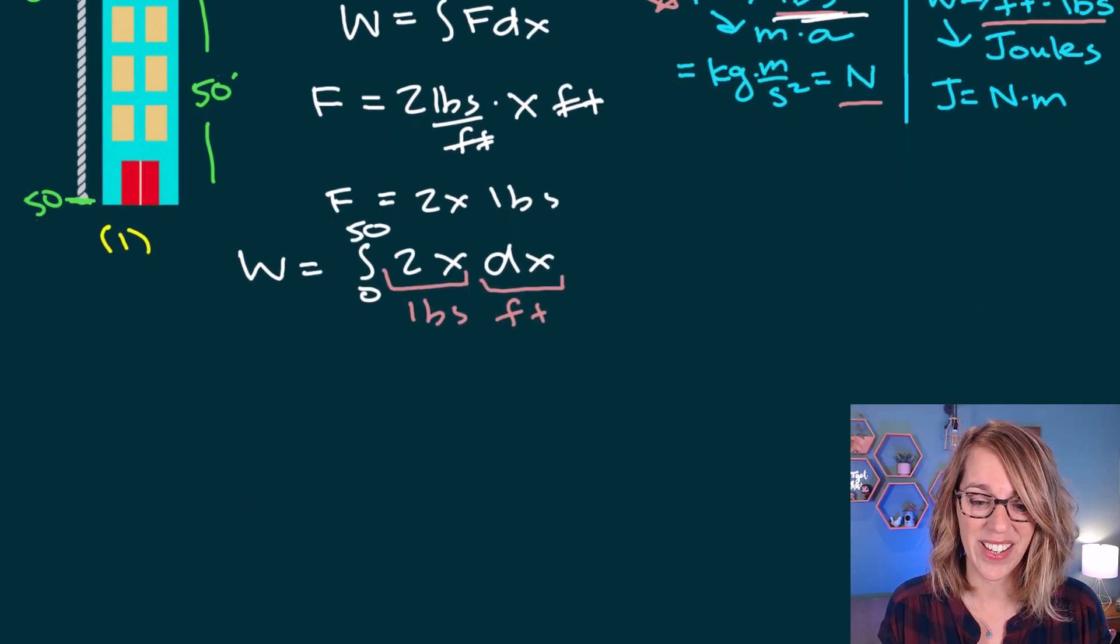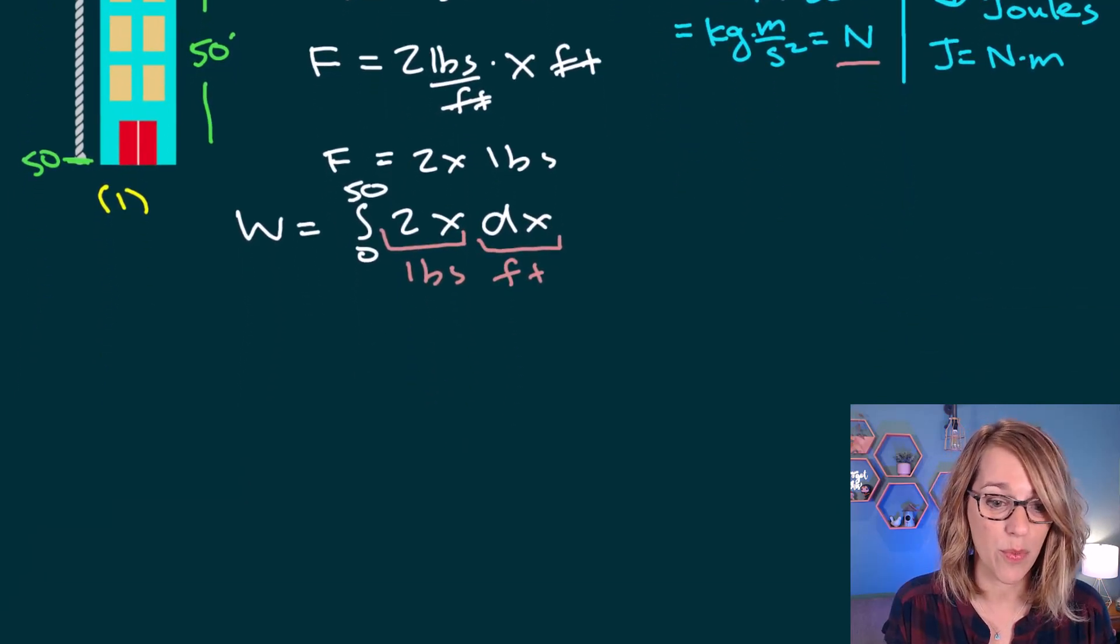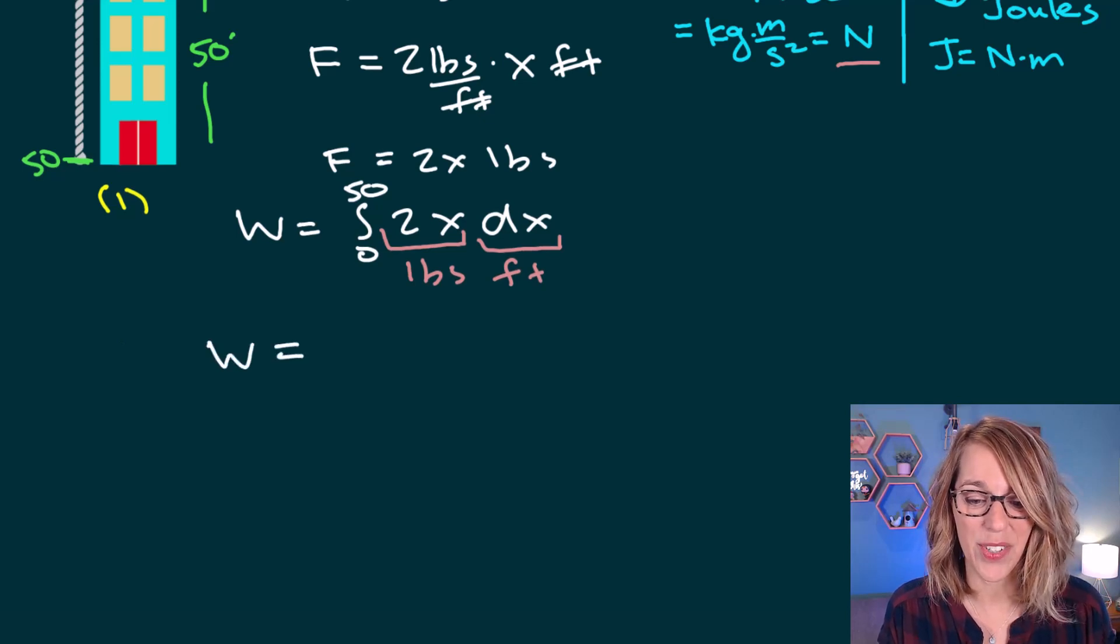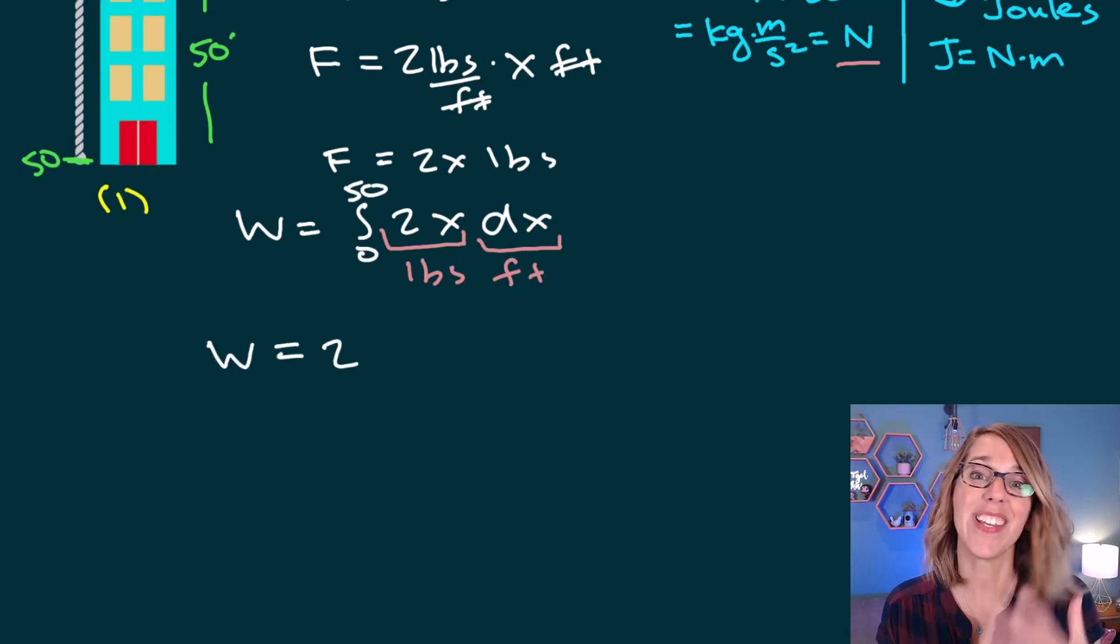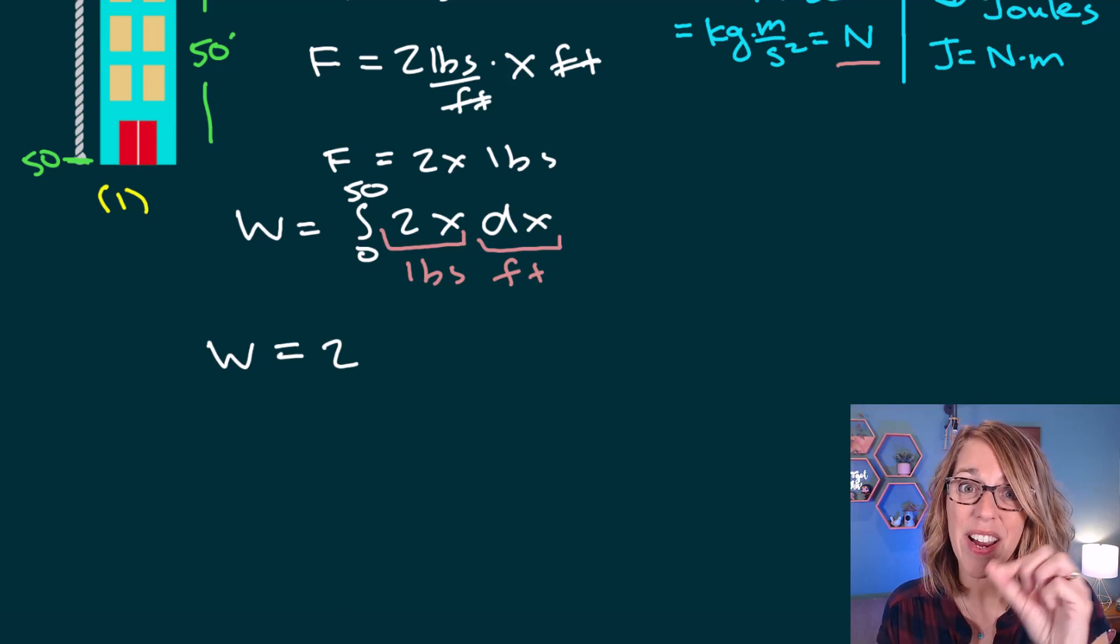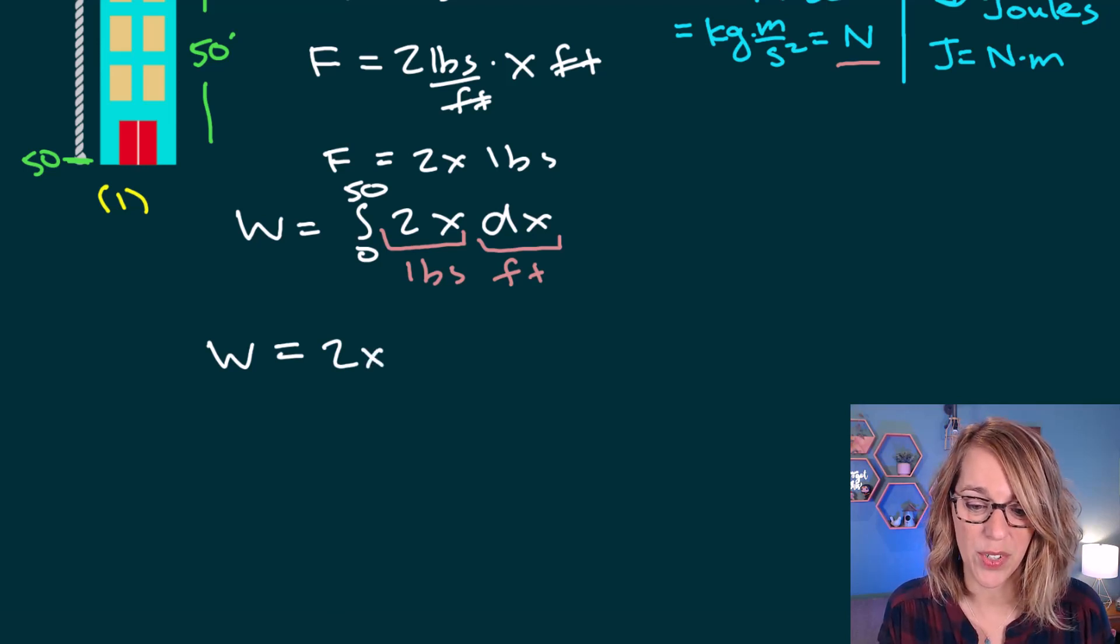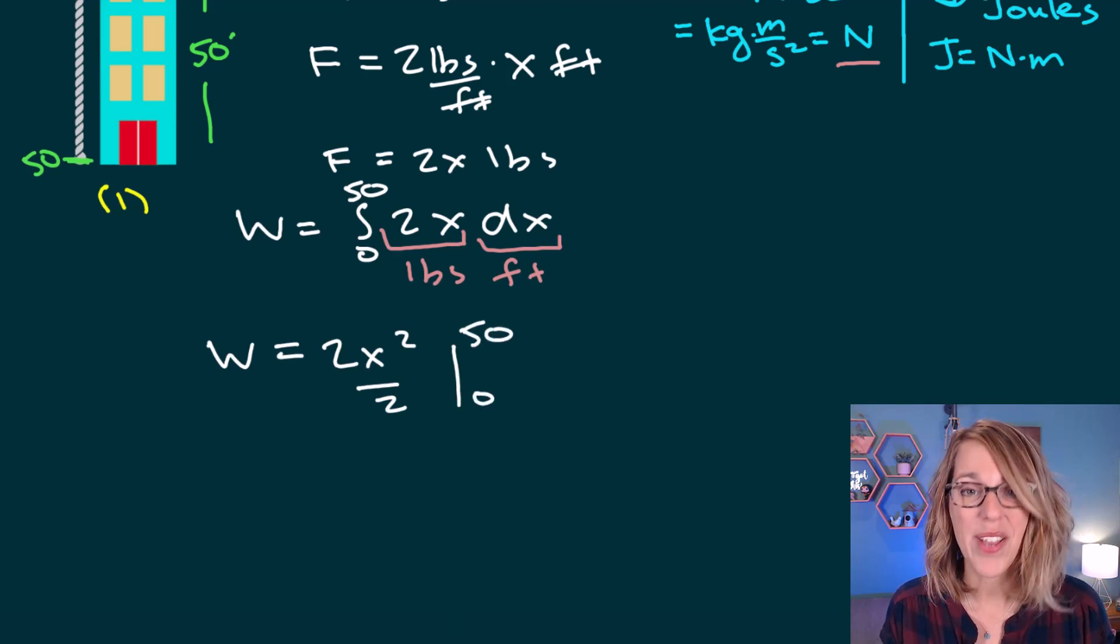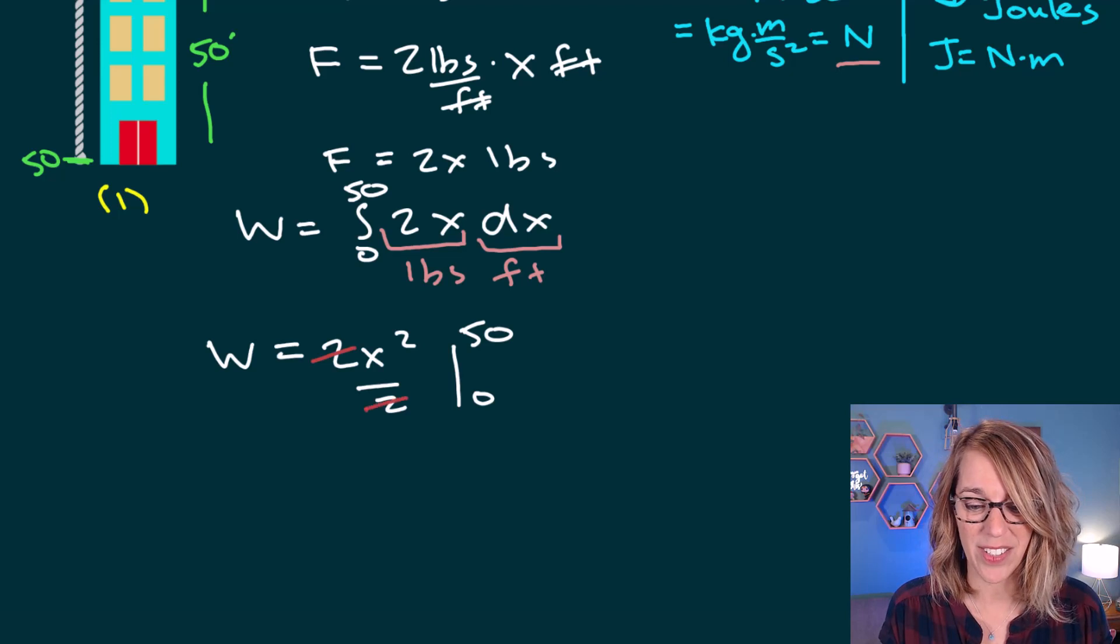Let's go ahead and integrate this, and we will have the work done for the rope only. Taking that integral, work is equal to 2, and then the integral of x is going to be x squared divided by that new variable 2. So x squared divided by 2, and we'll be evaluating that from 0 to 50. But I've got those 2s there so I can cancel those.